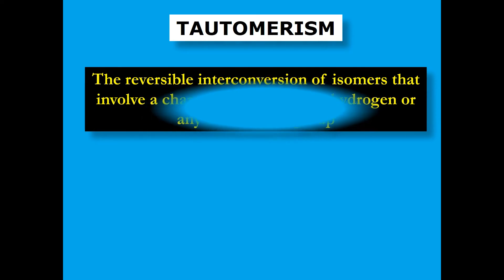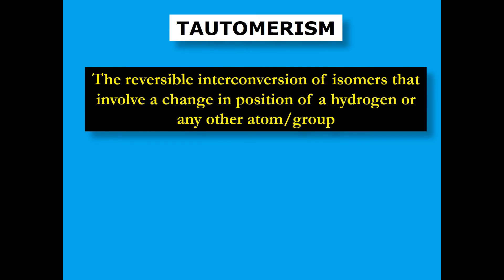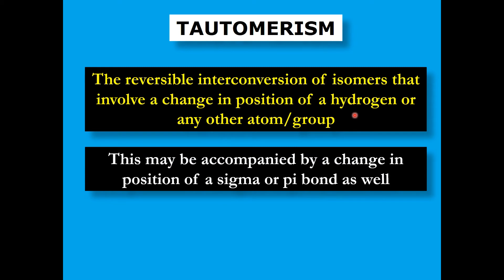Tautomerism is the reversible interconversion of isomers that involve a change in position of a hydrogen or any other atom or group. We have two isomers that are interconvertible into each other just by the change in position of a hydrogen or any other small group. When this happens, one isomer is converted into another, and at one point they are in equilibrium with each other.